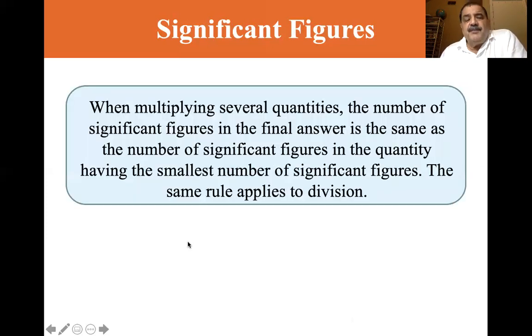Okay. Let's, I think this is a repeat of what I just said. When multiplying several quantities, the number of significant figures in the final answer is the same as the number of significant figures in the quantity having the smallest number of significant figures. The same rule applies to division. So if you've got three significant figures times three significant figures times two significant figures, your final answer should only have two significant figures, because the two is the smallest significant figures of each of those factors.